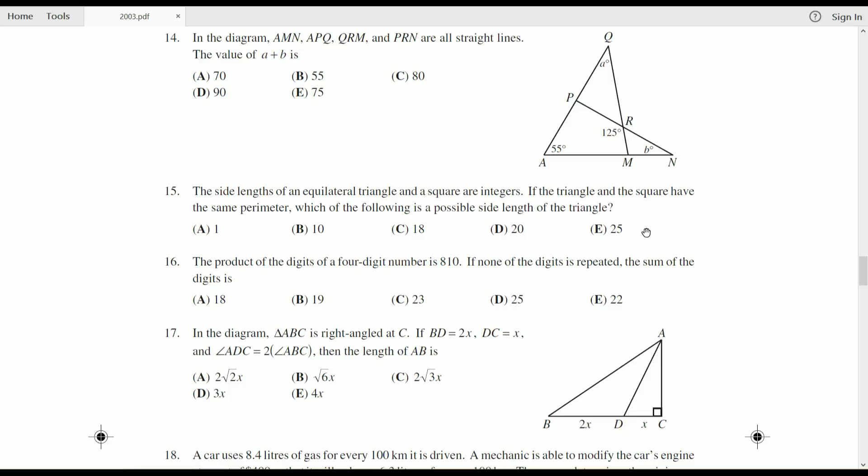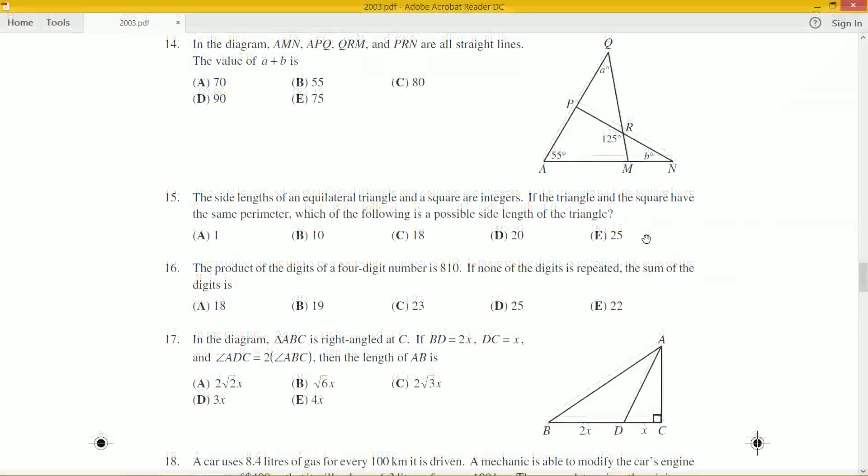Okay, so things to note: equilateral triangle, all the side lengths are the same. Same with a square, all of the four sides are the same length. So let's draw a picture of these two and give names to their side lengths.